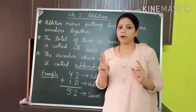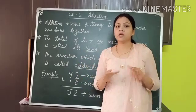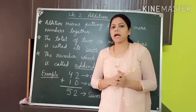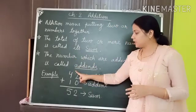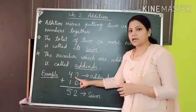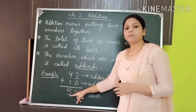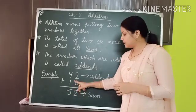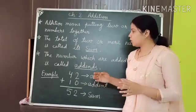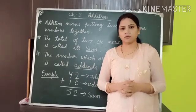When we combine 2 or more numbers all together, that is known as Addition. As you can see, I have written 2 numbers, 42 and 10, and at last I am getting the result — the number formed by adding these 2 numbers. So Addition means to put 2 or more numbers all together.